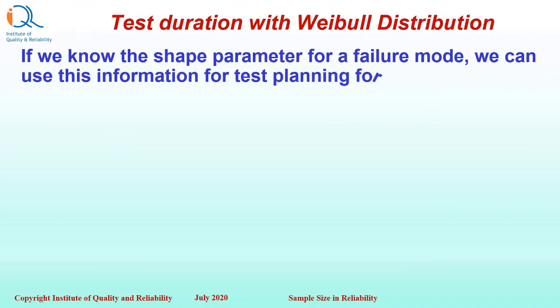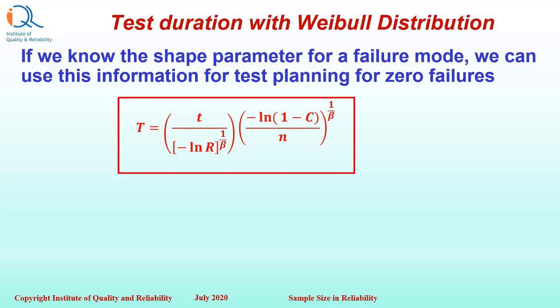We can also calculate test duration with Weibull distribution. If we know the shape parameter for a failure mode, we can use this information for test planning for zero failures. The formula is T equals t divided by minus ln of reliability raised to the power 1 over beta, times minus ln of 1 minus confidence level divided by sample size n, raised to the power 1 over beta.